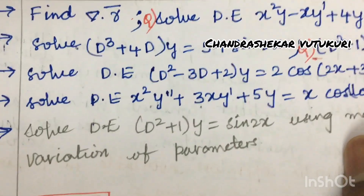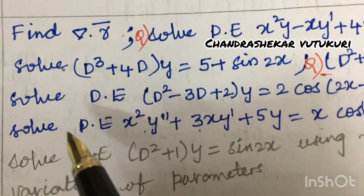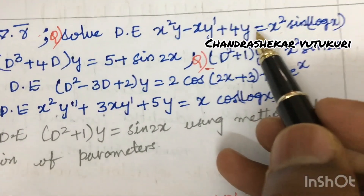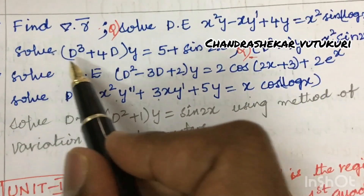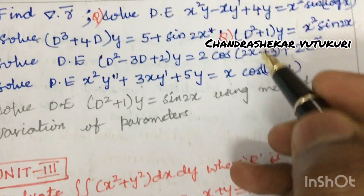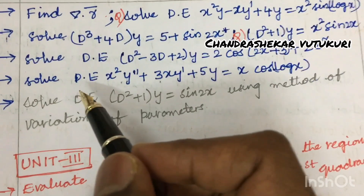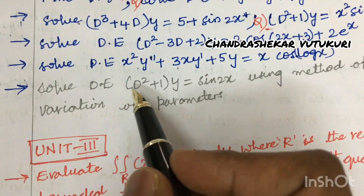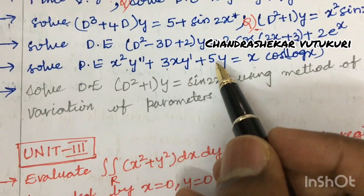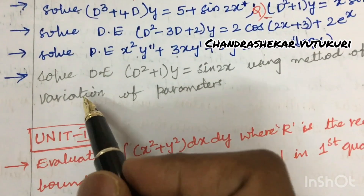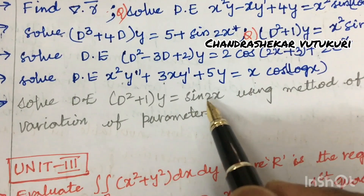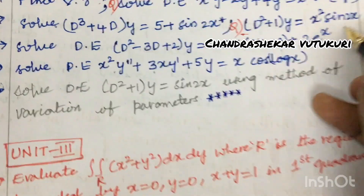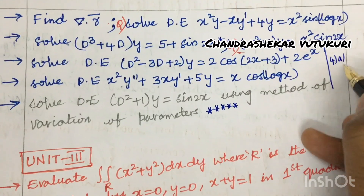You have enough time — exams are from the 16th. Solve the Cauchy-Euler differential equation x²y'' - xy' + 4y = x² sin(log x) — this is a very important gunshot question. Also solve x²y'' + 3xy' + 5y = x cos(log x), and solve (D² + 1)y = sin 2x using the method of variation of parameters — another very important gunshot question expected as 4a or 4b.